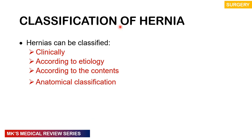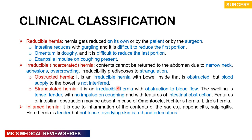How exactly do we classify hernias? We may classify them clinically, etiologically, according to contents, and anatomically. Clinically, this largely depends on whether you're able to reduce the hernia or not. You have reducible hernias, where contents can return to the cavity spontaneously, by the patient, or by the surgeon. If it's intestine, it reduces with gurgling sounds — it's difficult to reduce the first portion — while the omentum feels doughy and it's difficult to reduce the last portion. You get an expansile impulse when they cough.